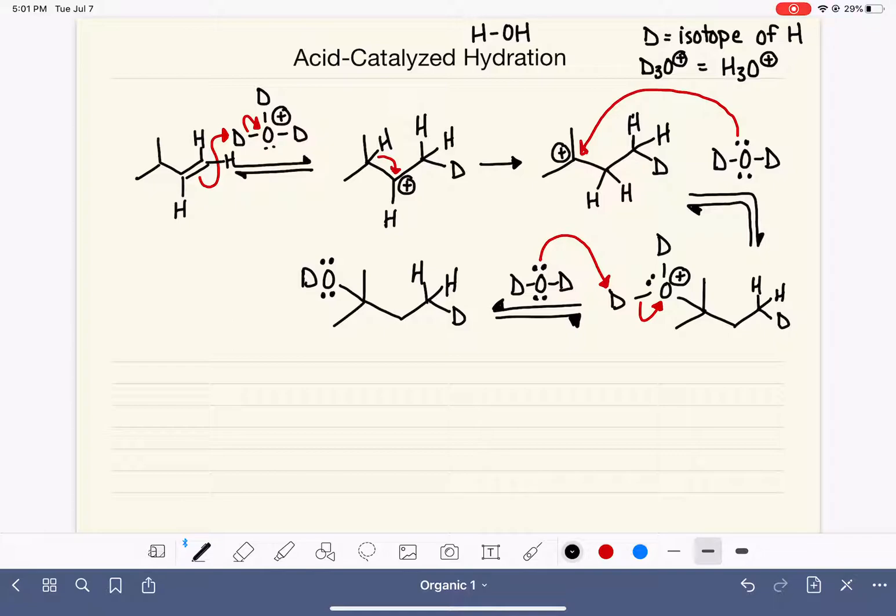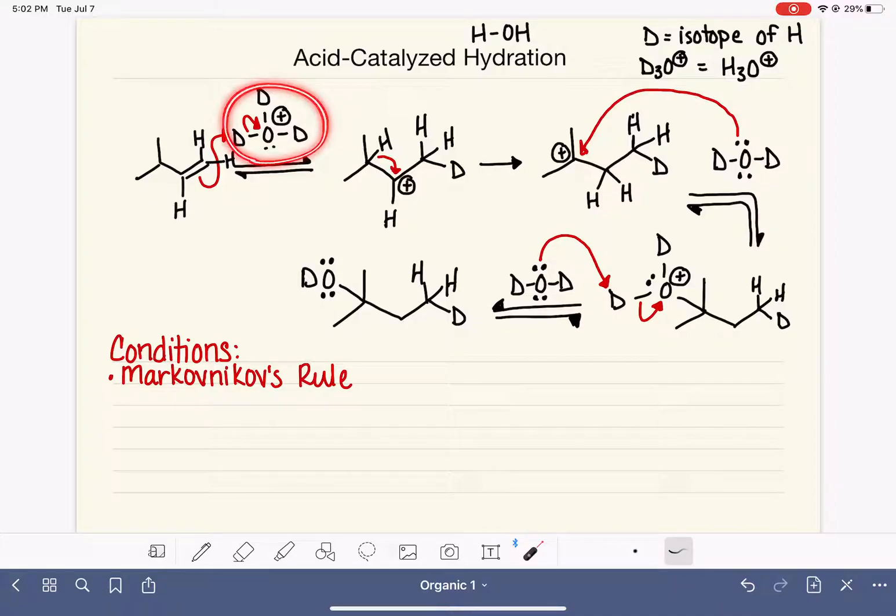So this is the mechanism for acid-catalyzed hydration. Let's write down some of the conditions or things that you need to keep in mind when you're working on this type of reaction. Number one, we are going to follow Markovnikov's rule. In the first step, when we are adding the hydrogen, we are going to follow Markovnikov's rule because that allows us to form the most stable carbocation.